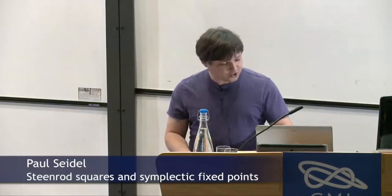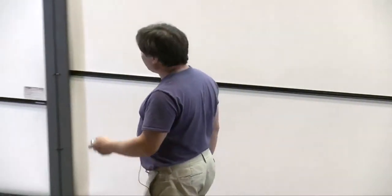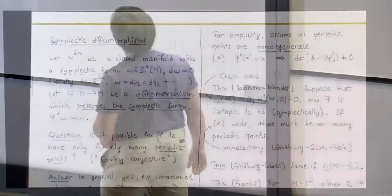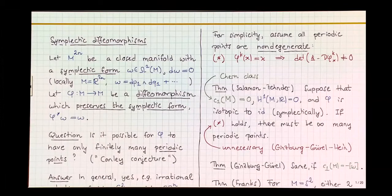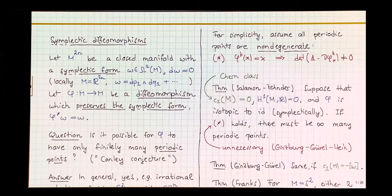Symplectic geometry is the modern outgrowth of Hamiltonian mechanics in the Hamilton-Jacobi formulation. I want to have a discrete time dynamical system, which means I have a manifold space of dimension 2n that it lives on, which I will assume to be closed, and it comes with a symplectic form, which is a 2-form. Locally it always looks like this — p are the momentum and position variables of classical mechanics.